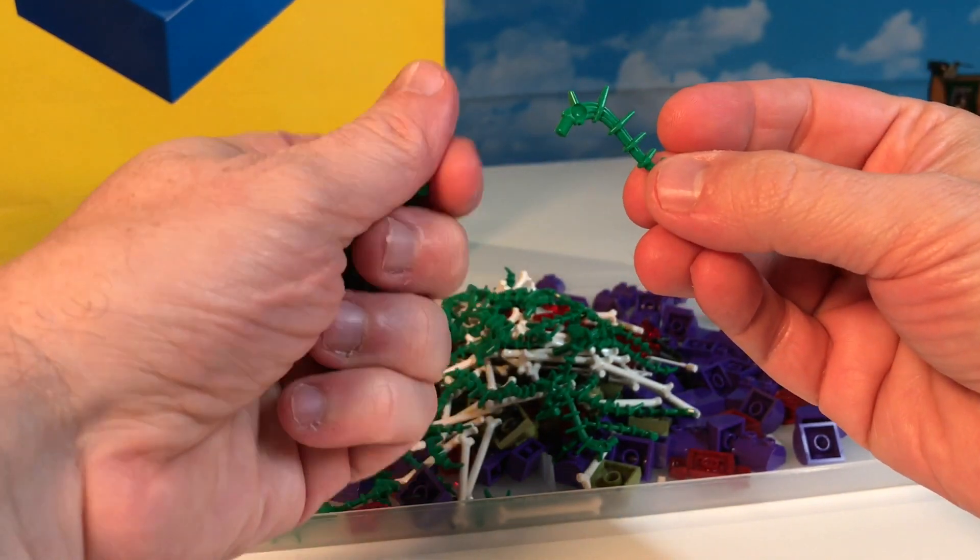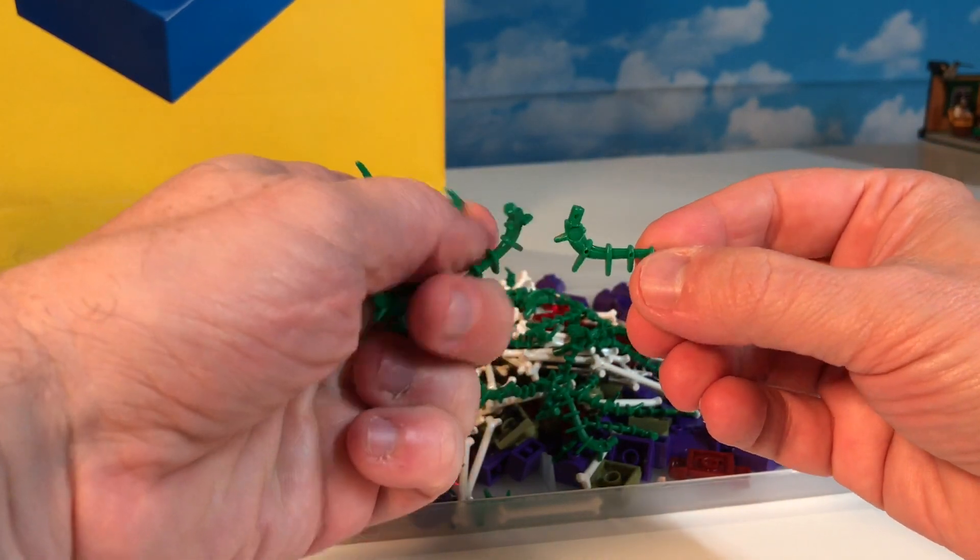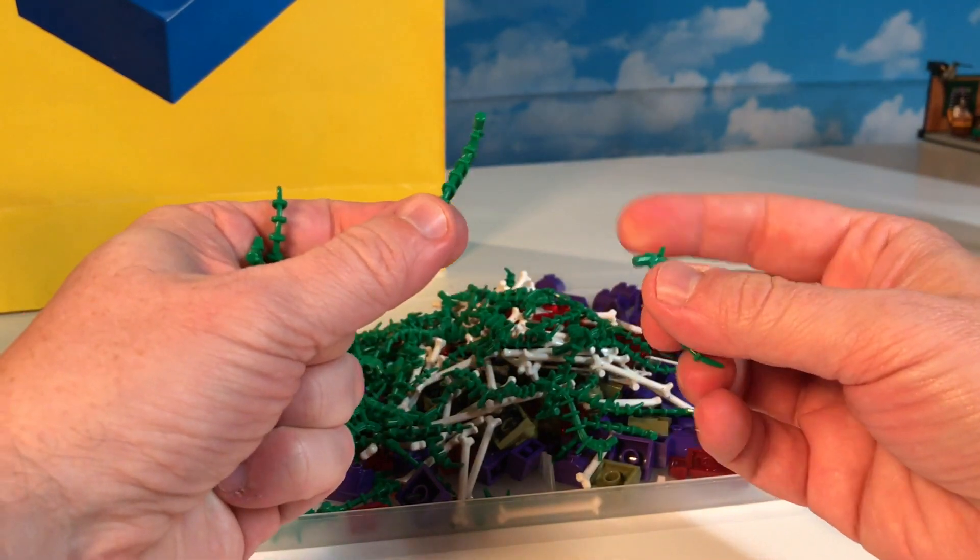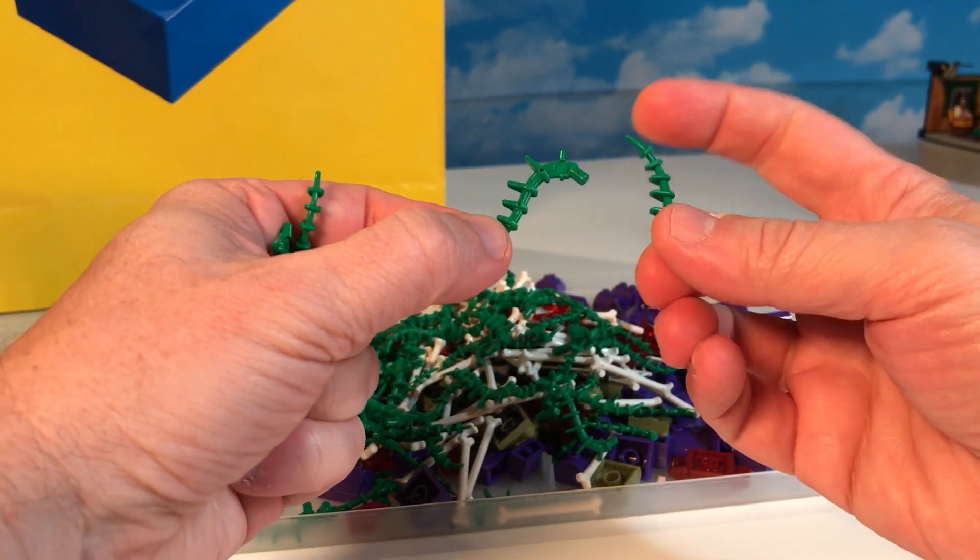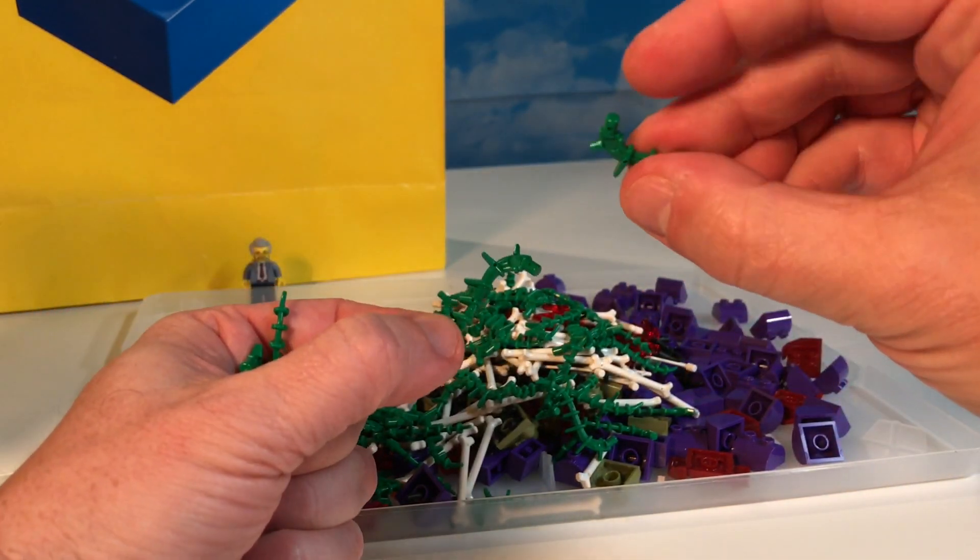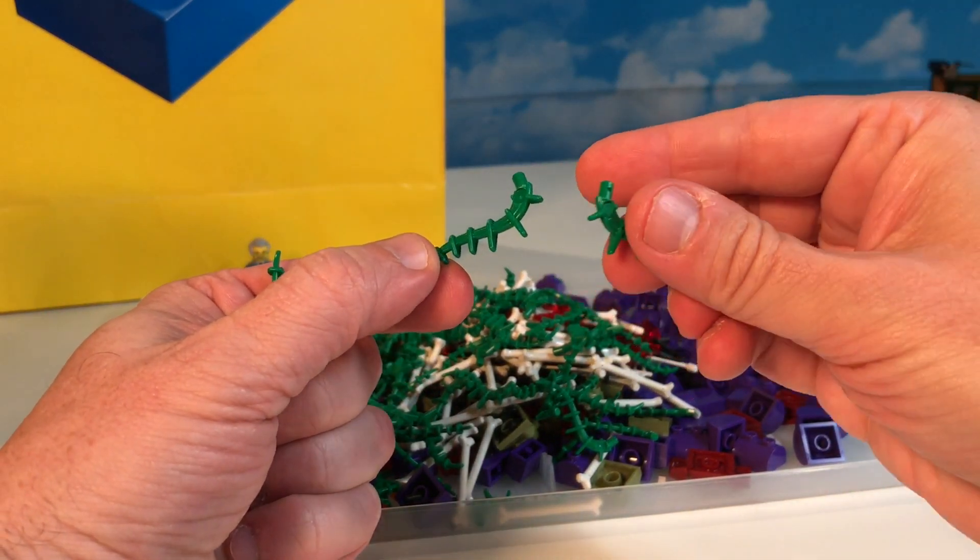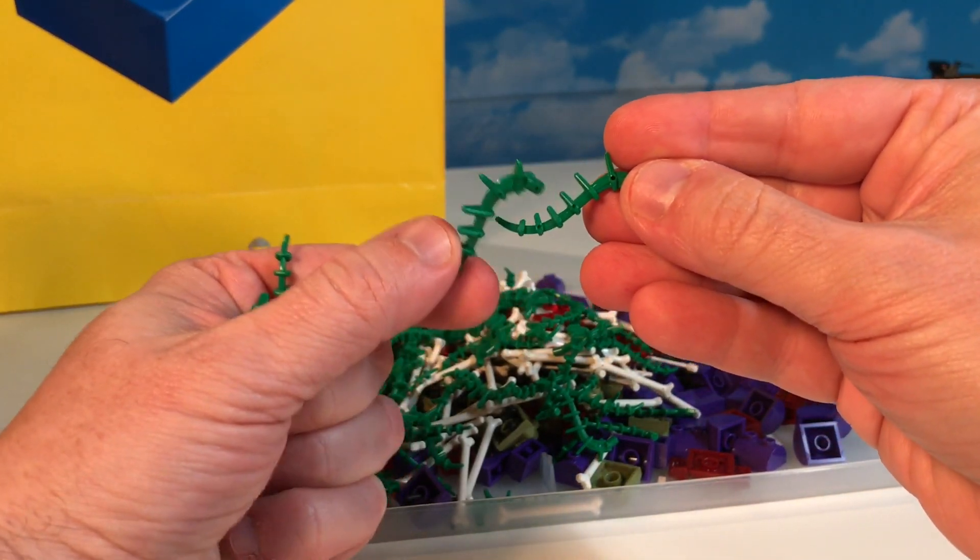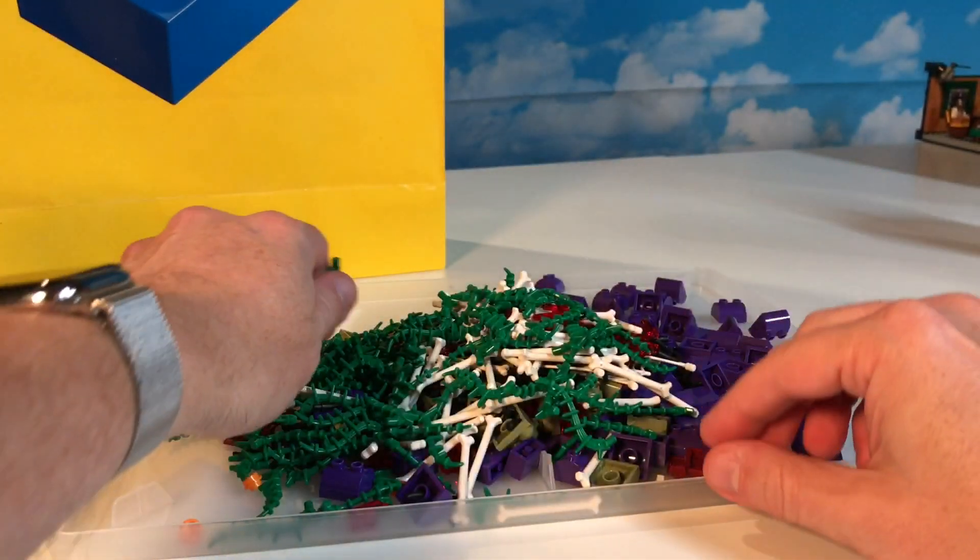Now these vine elements can be used for a whole lot of things. It can be used for octopus legs, for plant legs and arms. You can actually use it for vines. You could use it as caterpillars. You could use this for a lot of different things because this fits into an anti-stud perfectly. Your minifigures hands can clutch onto these as well. I don't know what I'm going to use them for, but I got a ton of them.